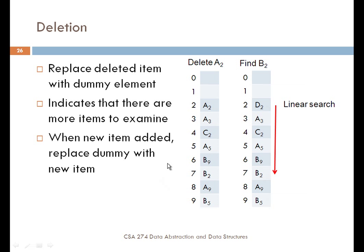One technique you can use is to replace a deleted item with a dummy element to indicate that the item was deleted but there may be other things in the chain still to be found. We put a dummy D2 in here so that when we do the search for B2, we hit this element and recognize there's nothing here but there are other things potentially in the chain. It'll do a linear search until it finds B2. The key to deletion is to replace the element with something that indicates there was something here, there is now nothing, but there is something in the chain.